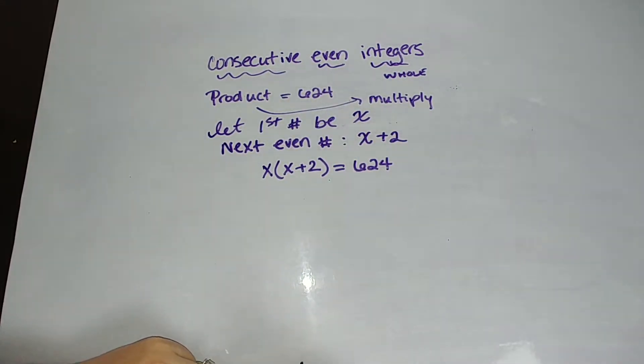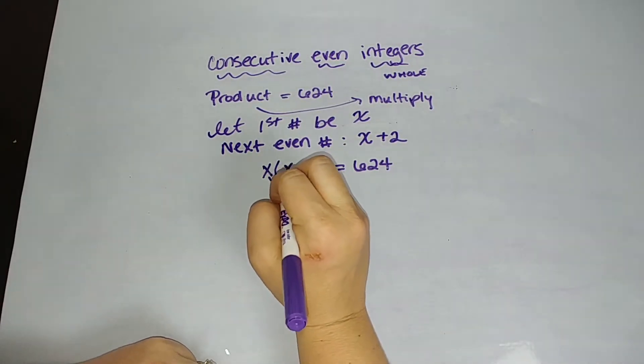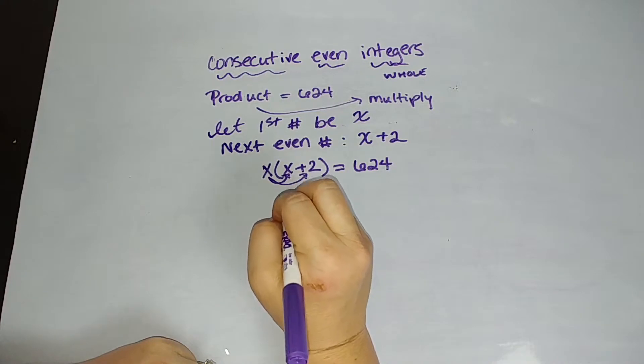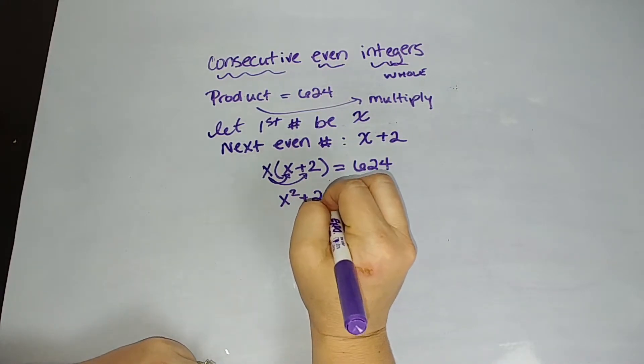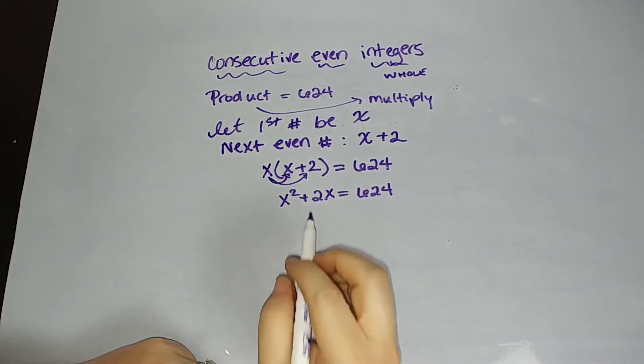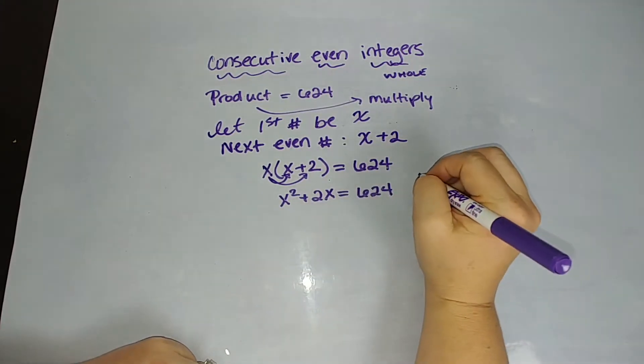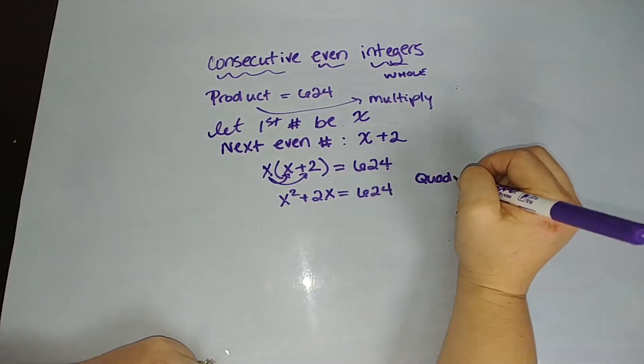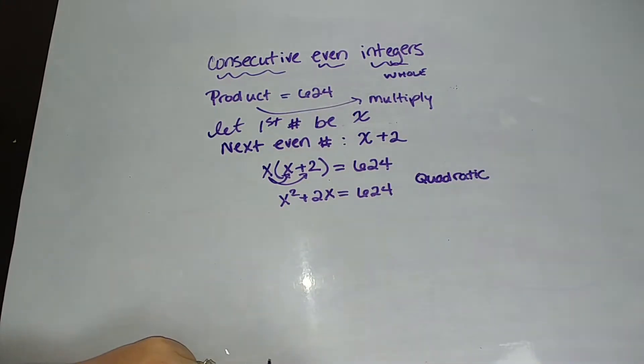Here's where I knew it was quadratic and that it was probably in Algebra 1 or Algebra 2. I'm going to multiply these. We're going to distribute. x squared plus 2x equals 624. Anytime you have an equation whose highest power is 2, you have a quadratic. And you use all those quadratic skills that you learned.